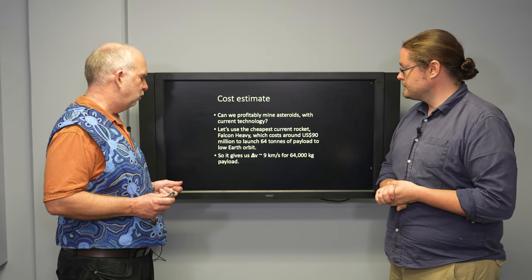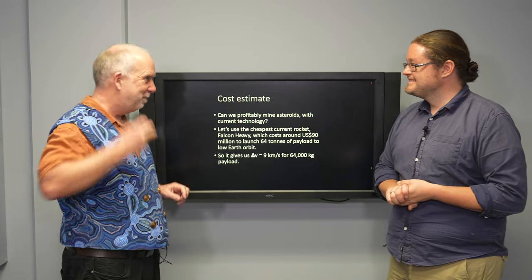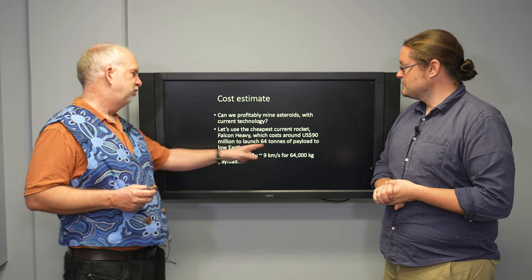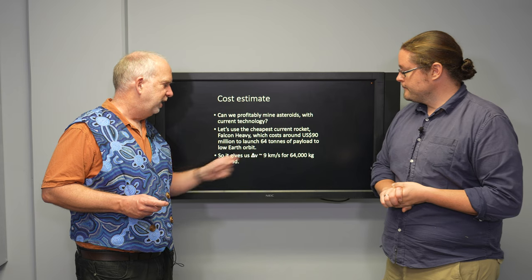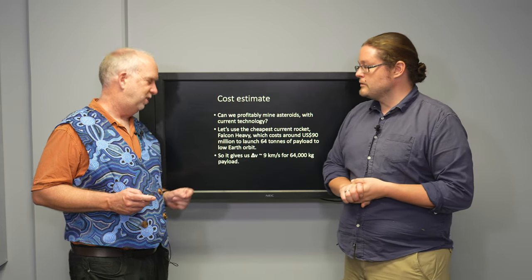So let's use the current cheapest rocket, which is the Falcon Heavy. Hopefully supplied by starships later this year, but at the moment that's the cheapest, which costs about $90 million to launch 64 tons of payload to a low Earth orbit. So that gives us about a delta V of 9 kilometers per second for 64,000 kilograms.